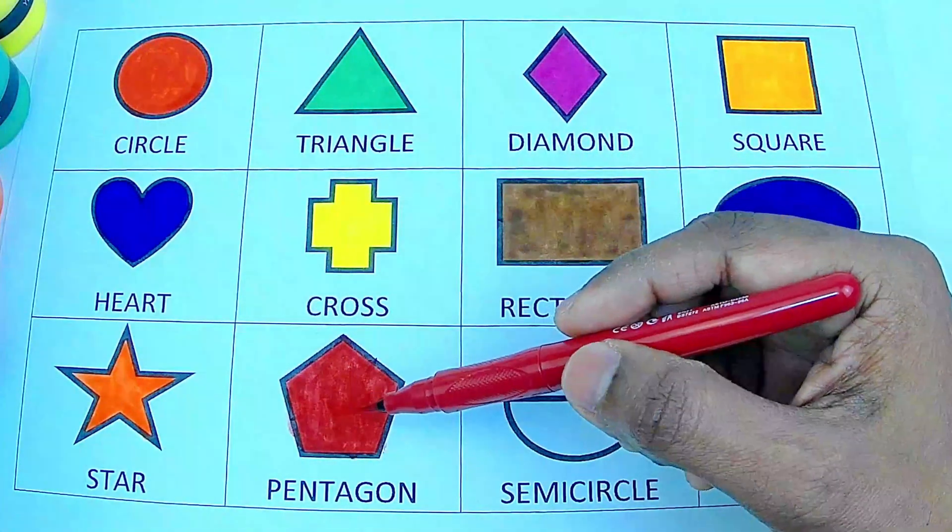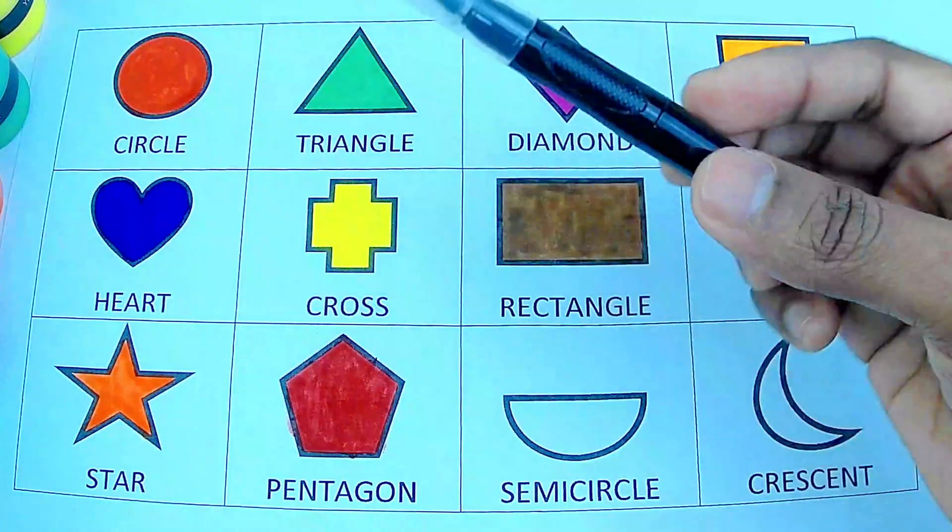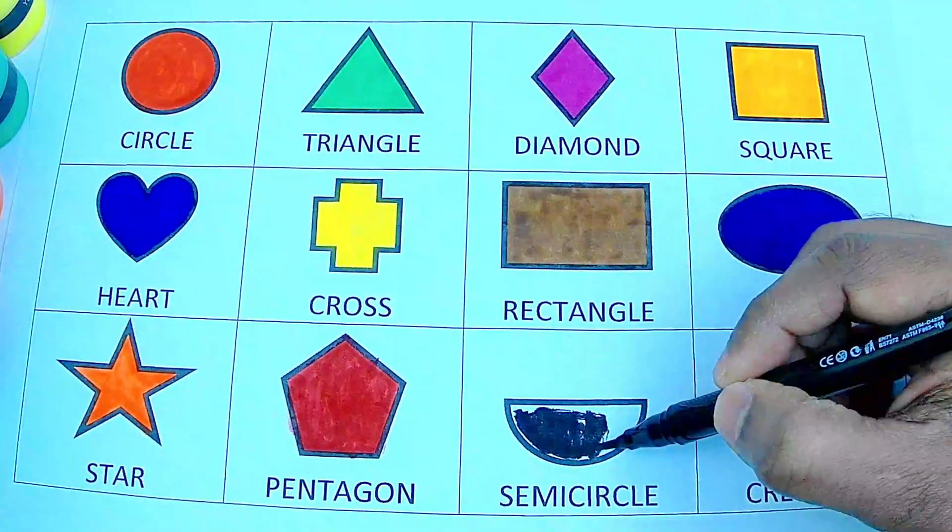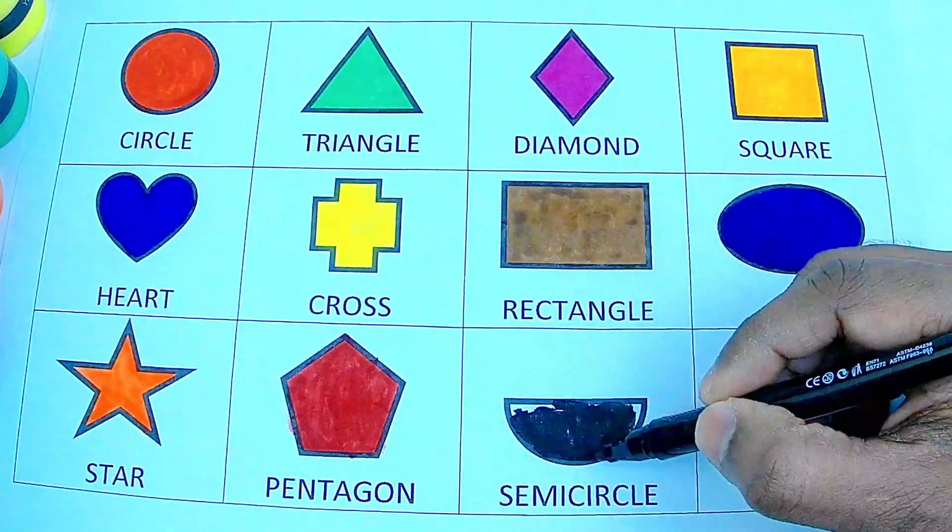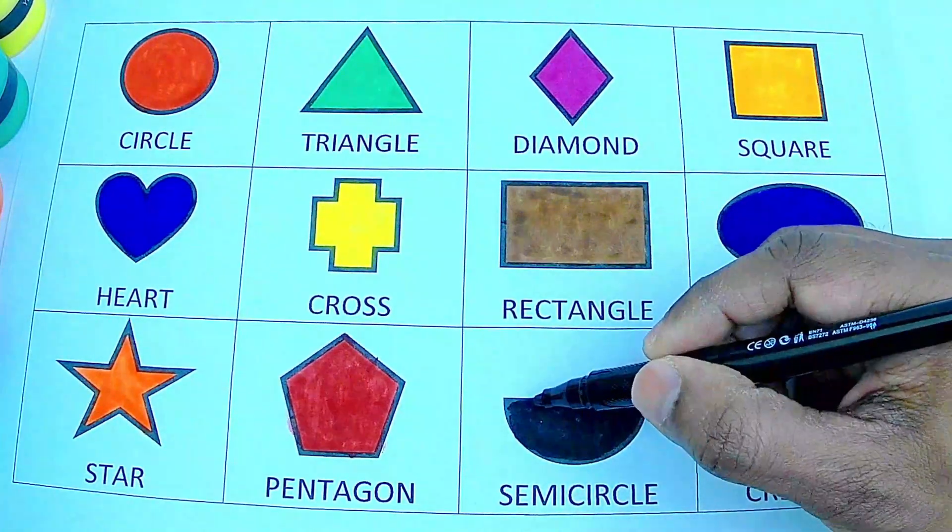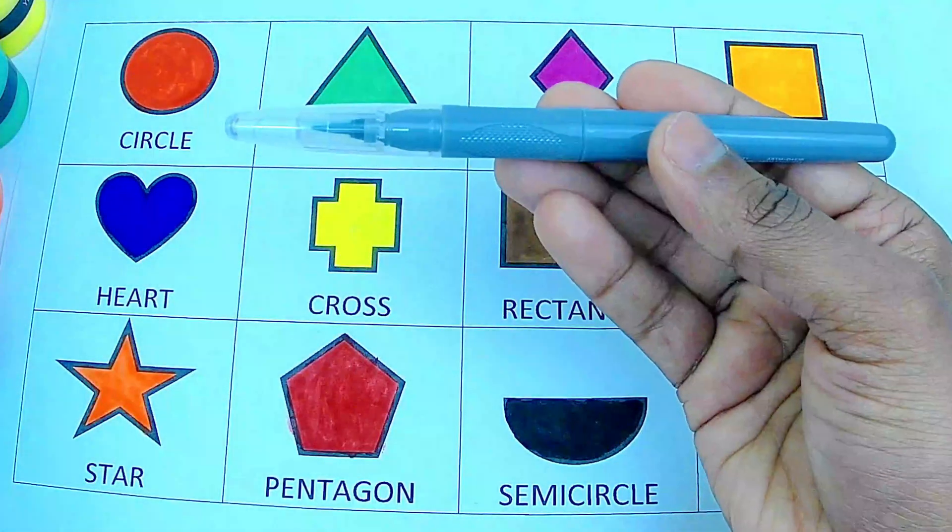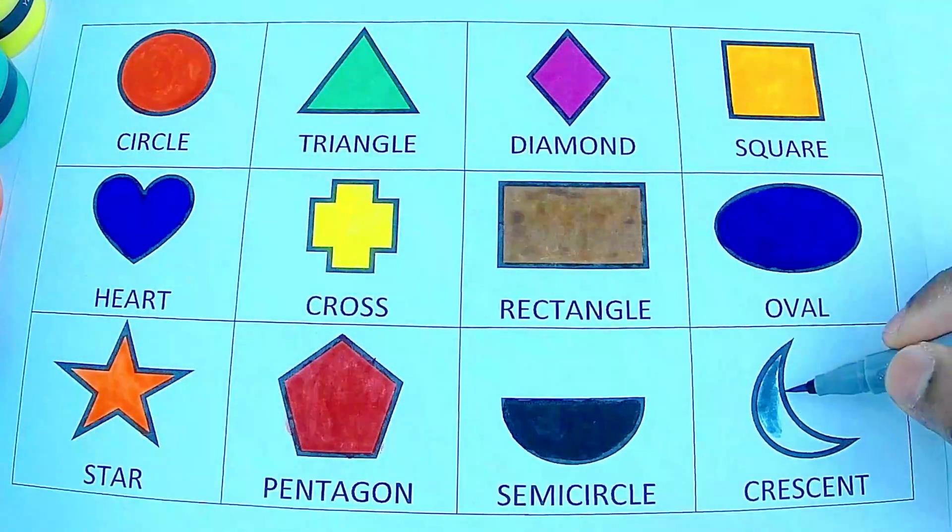Maroon color pentagon. Black color semicircle. The semicircle is nothing but half of a circle. Gray color crescent, the curved shape of a moon.